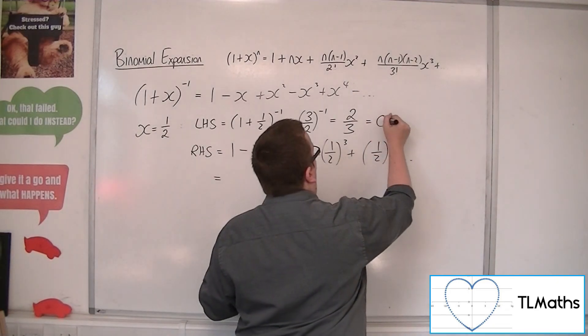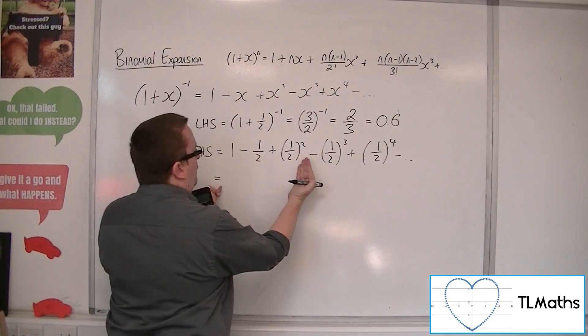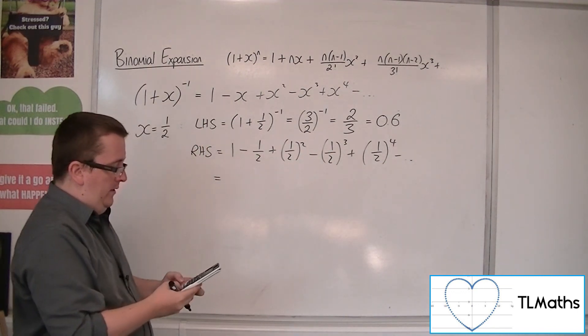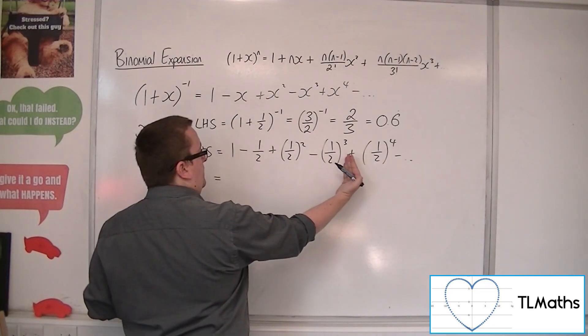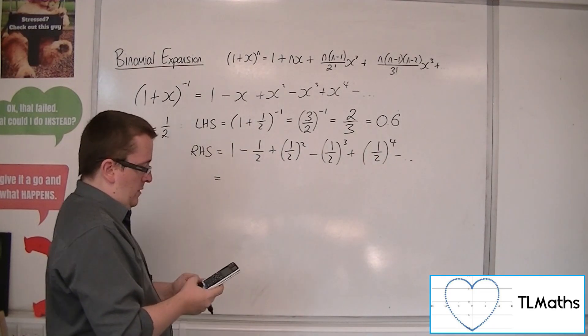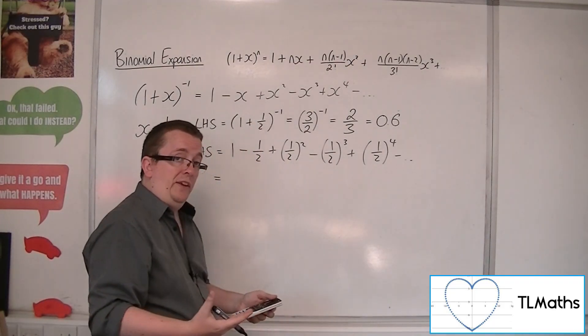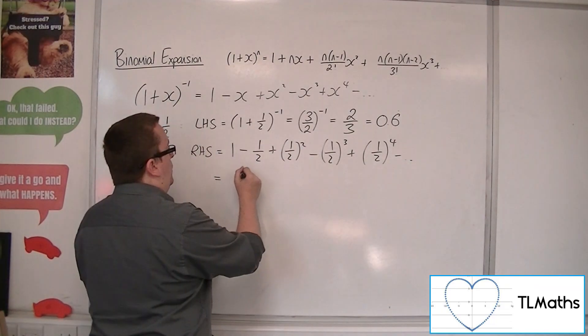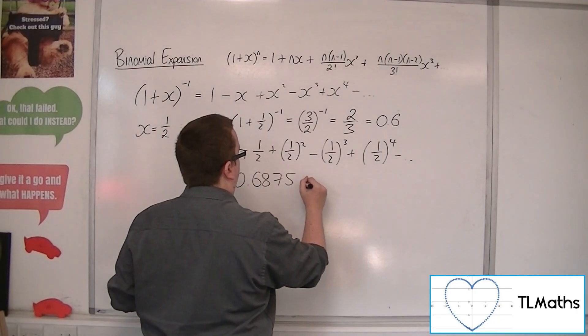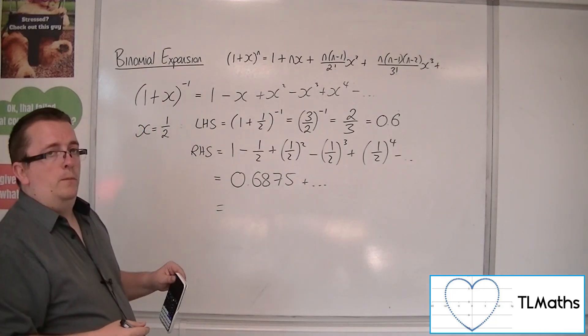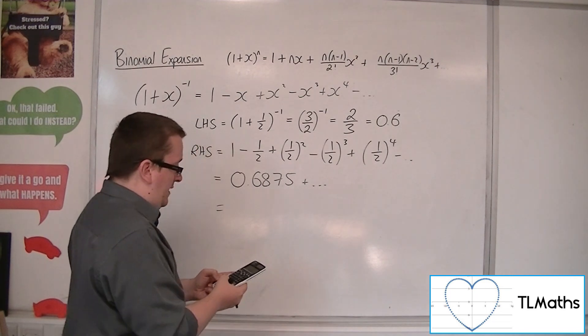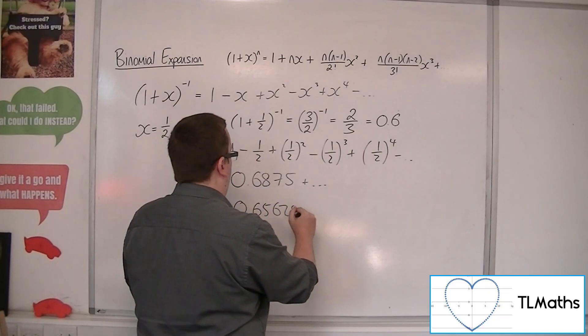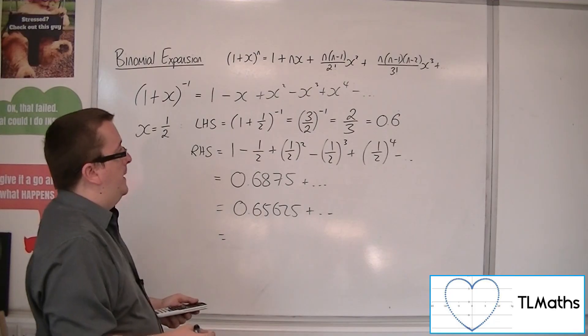So, thinking about this as 0.6 recurring. With those first three terms, we now have 0.75. Take away an eighth gets us to 0.625. Then we add on 1 sixteenth, which gets us to 11 sixteenths, which is 0.6875. So, using those four terms, we currently have 0.6875. What if we added on another term? So, we need to subtract 1 over 32 now. And we get 0.65625. A little bit less.